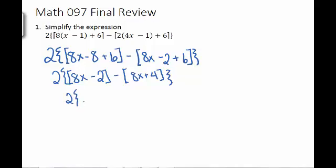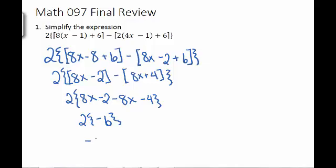Now let's get rid of the brackets. The first one doesn't have anything in front of it except for the next brace, so we can just ignore it. The second one has a negative sign in front of it, so we have to distribute that negative sign all the way through: negative 8x minus 4. Now we can combine: 8x minus 8x is 0, negative 2 minus 4 is negative 6, and 2 times negative 6 is negative 12. So that's as small as we can get on this one.